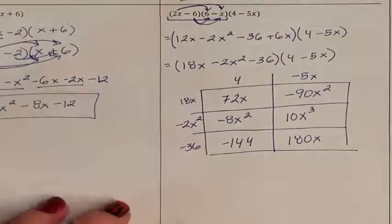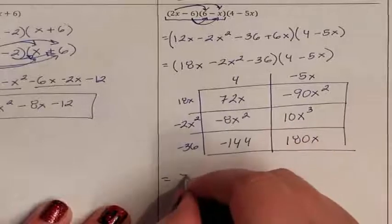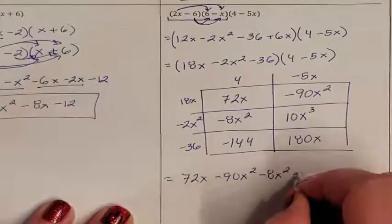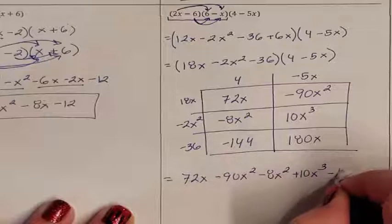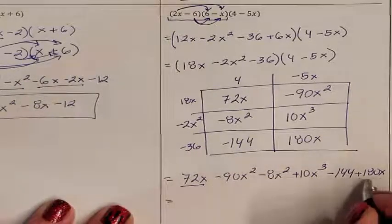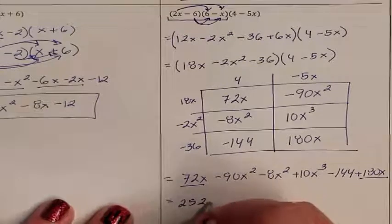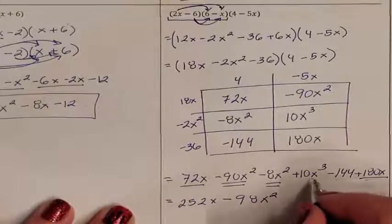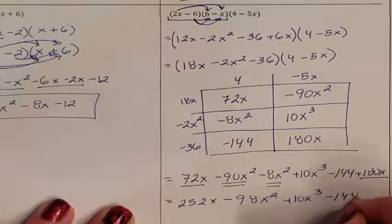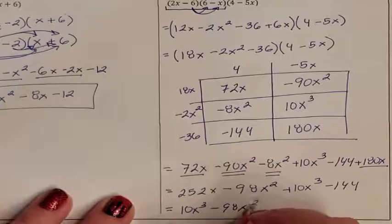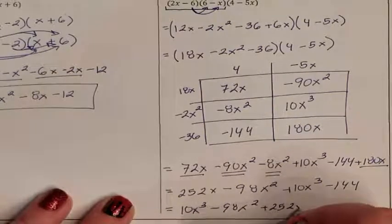Now combining like terms: 72x minus 90x squared minus 8x squared plus 10x to the third minus 144 plus 180x. x's go with x's: 72x plus 180x is 252x. x squareds go with x squareds: negative 90 minus 8 is negative 98x squared. There is no other x to the third term, and no other constant. Now I need to make sure it's in standard form — highest exponent first: 3, then 2, then 1, then the constant.